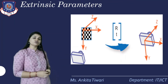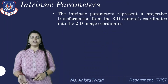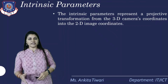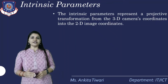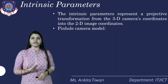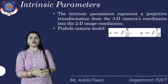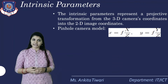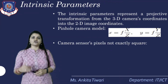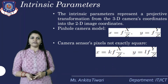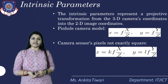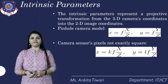The intrinsic parameters represent a projective transformation from 3D camera coordinates into 2D image coordinates. The pinhole camera model defines this with: x = fx / z and y = fy / z. Since camera sensor pixels are not exactly square, we define x = k·(fx / z) and y = l·(fy / z), where k and l are scale parameters.